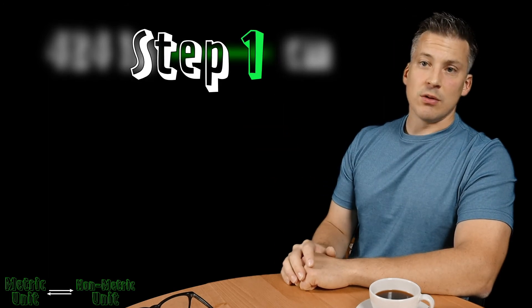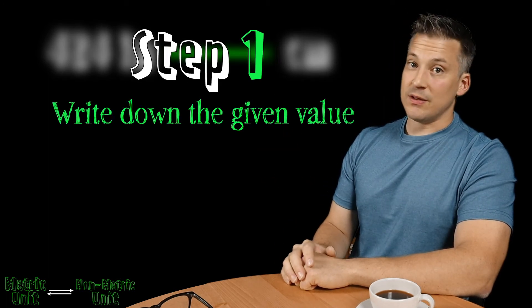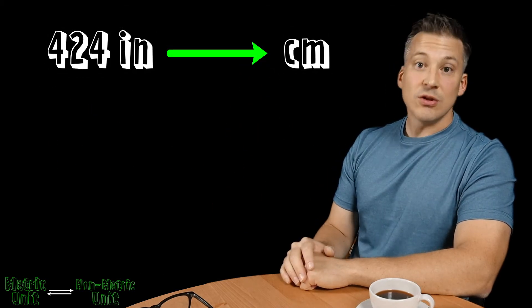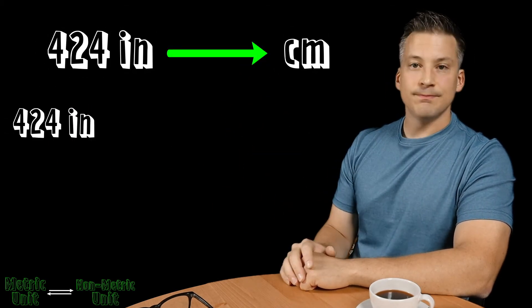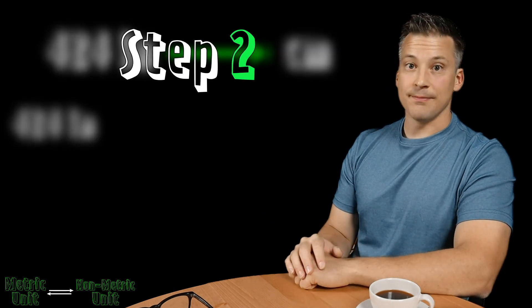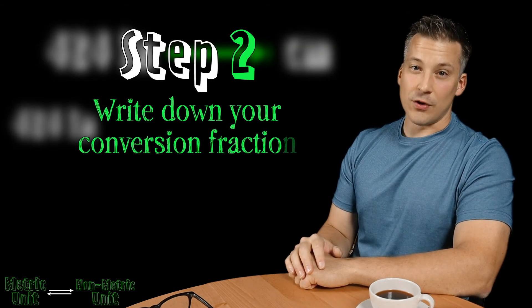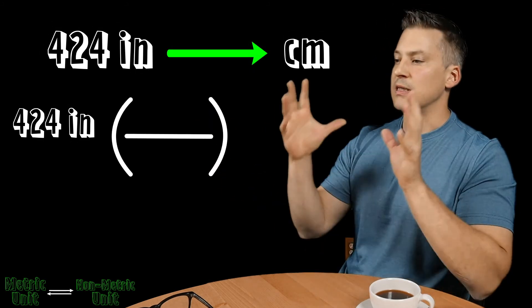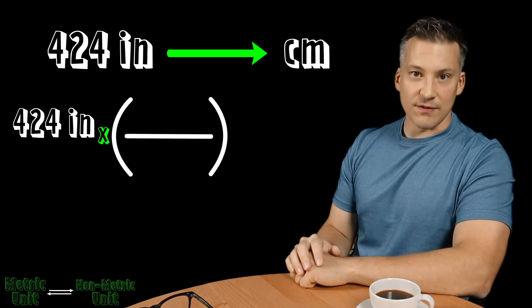So step number one is the same as we saw before, where we're just going to write down the given value. So in this problem we're given 424 inches, so we just write it down. The second step is also the same. So what we're going to do is just write our conversion fraction. Remember, two parentheses, a division line, and we're going to take that and we're going to multiply it then by the given value.